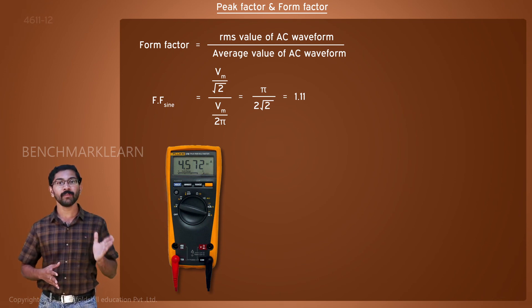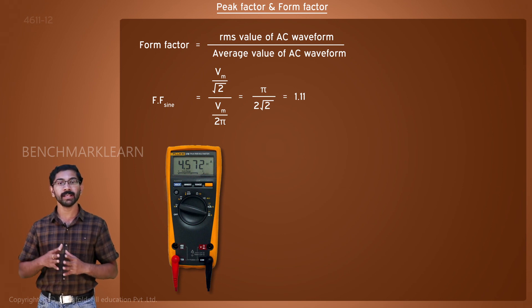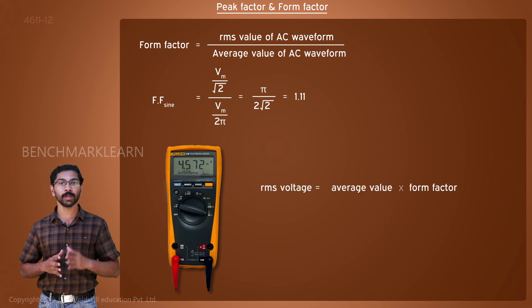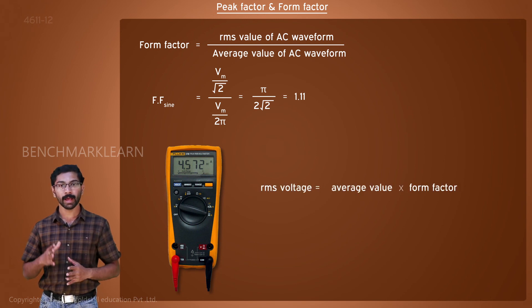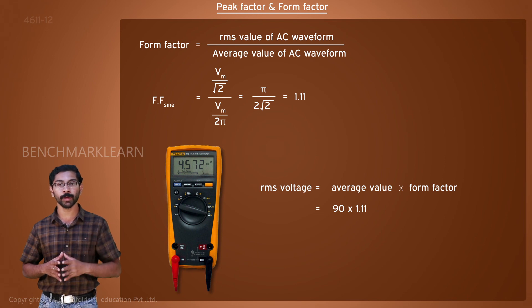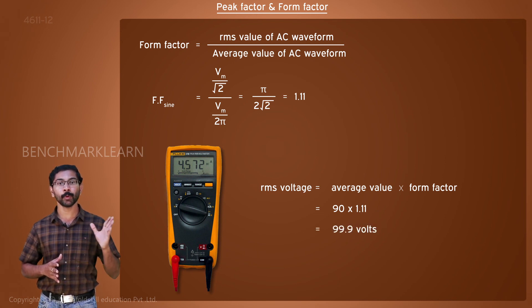For example, if the average voltage value of a sinusoidal AC is 90 volts, then RMS voltage is equal to average value multiplied by form factor, which is equal to 90 × 1.11, which is equal to 99.9 volts.